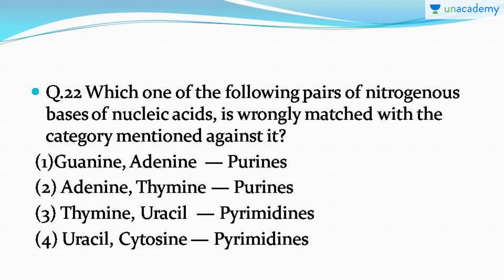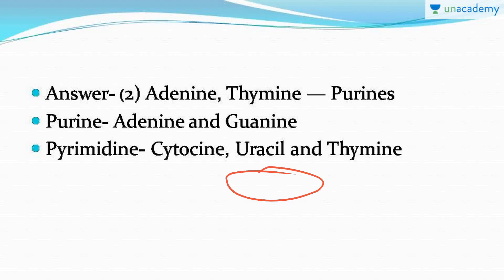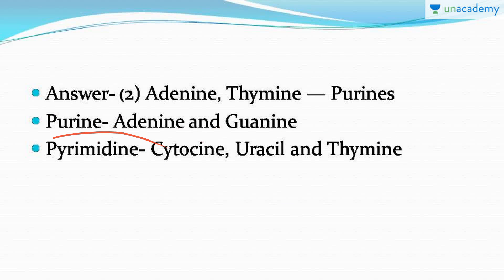Question number 22: which one of the following pairs of nitrogenous bases is wrongly matched with the category mentioned against it? You must be thorough with what is a purine and what is a pyrimidine. The correct answer is option number two: adenine and thymine — thymine is not a purine. Adenine and guanine are purines, whereas cytosine, uracil, and thymine are pyrimidines.